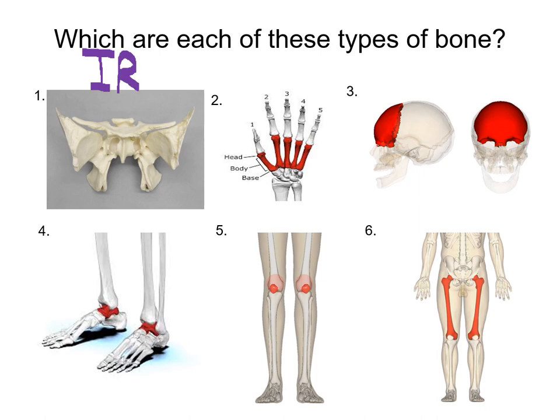Number two, what type of bones are we looking at? We are looking at the metacarpal bones — the very long and skinny bones that make up the back of your hand, the palm region. They're long and skinny, and therefore they are long bones.